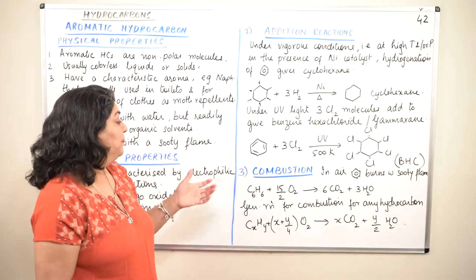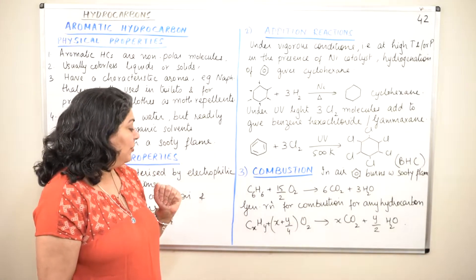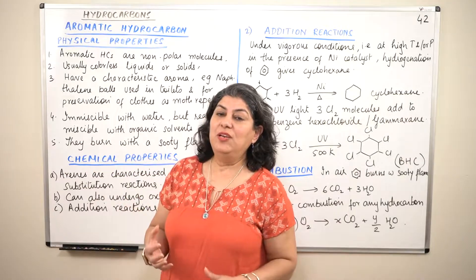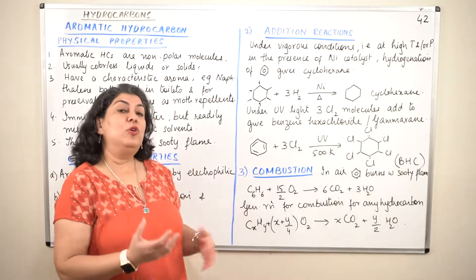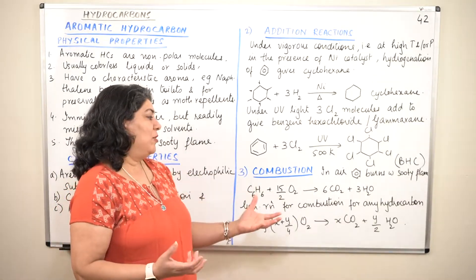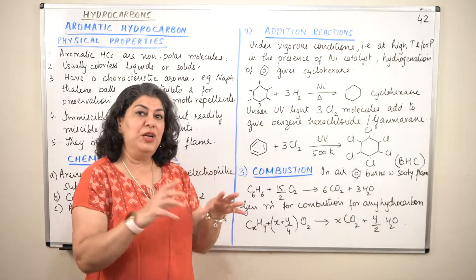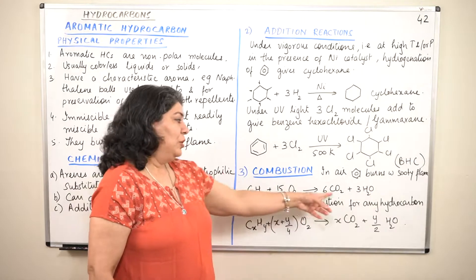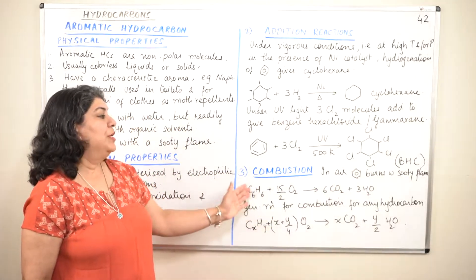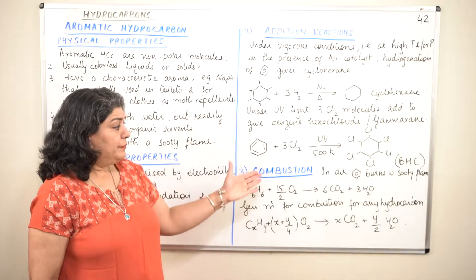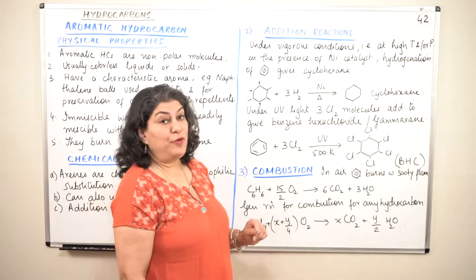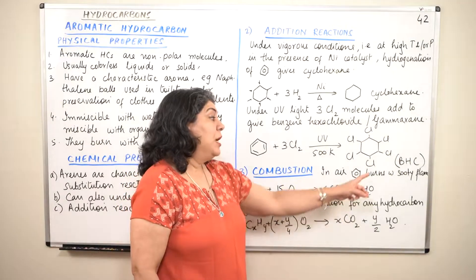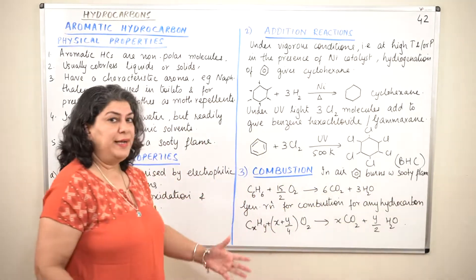Next is the combustion of benzene or aromatic hydrocarbons. As mentioned, they burn with a sooty flame. Benzene burns in oxygen to give carbon dioxide and water — carbon combines with oxygen to give CO₂, and hydrogen combines with oxygen to give H₂O. The equation is balanced accordingly. Combustion produces carbon dioxide and water, but it burns with a sooty flame because benzene is a highly unsaturated hydrocarbon.